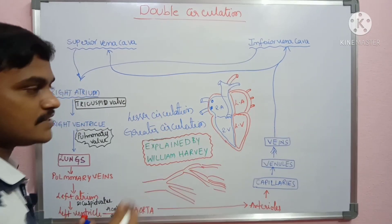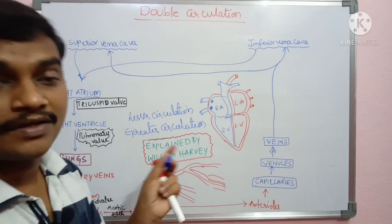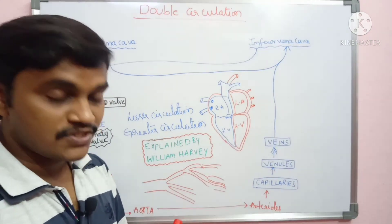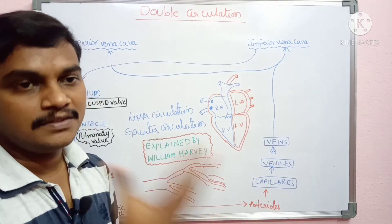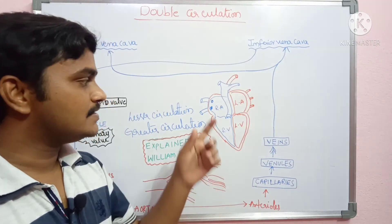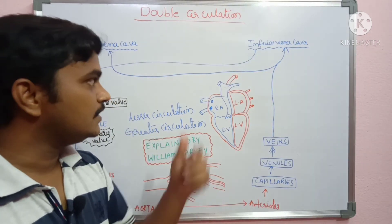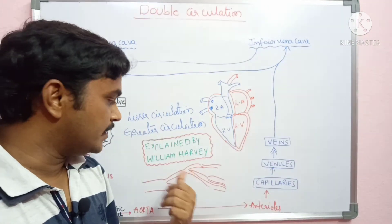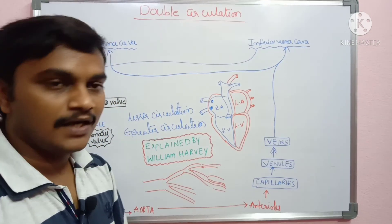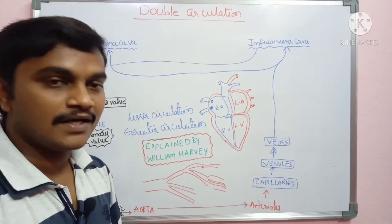This type of circulation is called double circulation, which is present in birds and mammals. This circulation was explained by William Harvey.